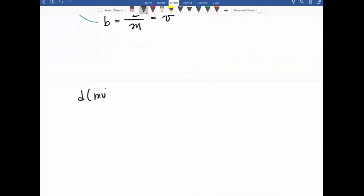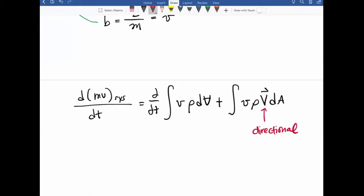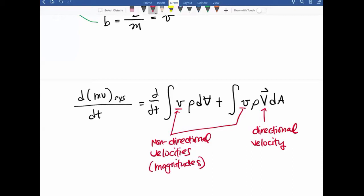Capital B is going to be mass multiplied by velocity. Little b is our intensive property or parameter, which is not a function of mass. So little b is capital B over m, which is just velocity. I'm going to substitute these parameters into my Reynolds transport theorem to arrive at the momentum equation. I'm just showing you the derivation to show you how things come into play.